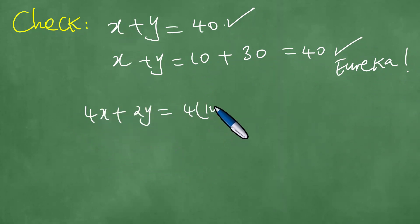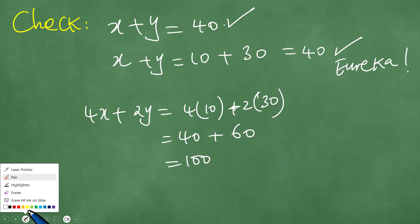So 4 into X, which is 10, plus 2 into Y, which is 30, and this is 40 plus 60, which is 100. And therefore, in the end, we agree that obviously Joseph counted 100 legs. And as a consequence, we have confirmed the correctness of the result.